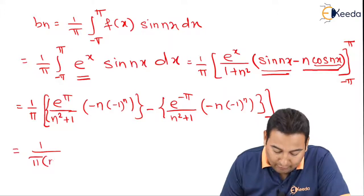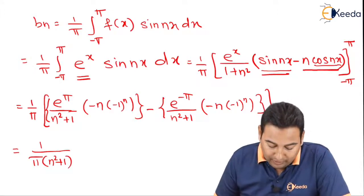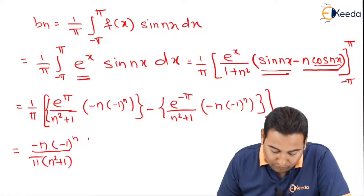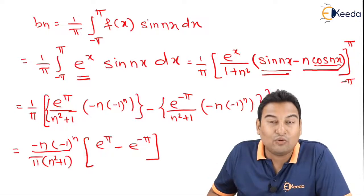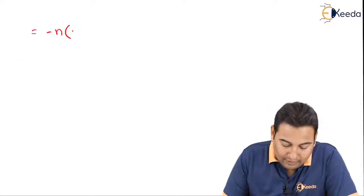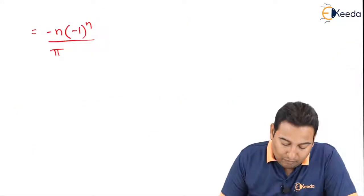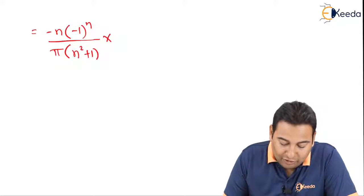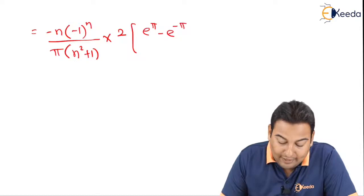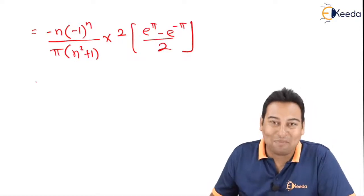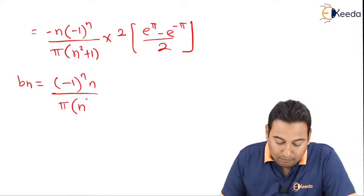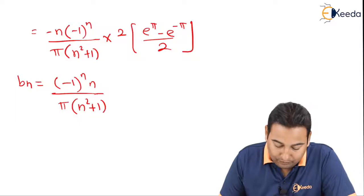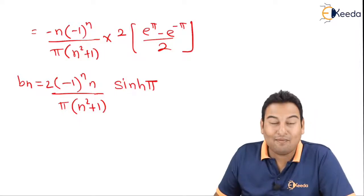Taking −n·(−1)ⁿ common from the numerator, we are left with e^π − e^(−π) inside, divided by (n²+1). Multiplying and dividing by 2, this converts to 2·sinh(π). Therefore bₙ = −2n·(−1)ⁿ·sinh(π) / [π(n²+1)]. This is the value of bₙ.